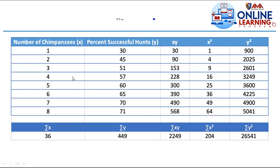Example: number of chimpanzees versus percent success by hand. We have x and y data, with a total of 8 observations. We compute the xy column — column 1 multiplied by column 2 — then x squared and y squared, with summations computed for each column.